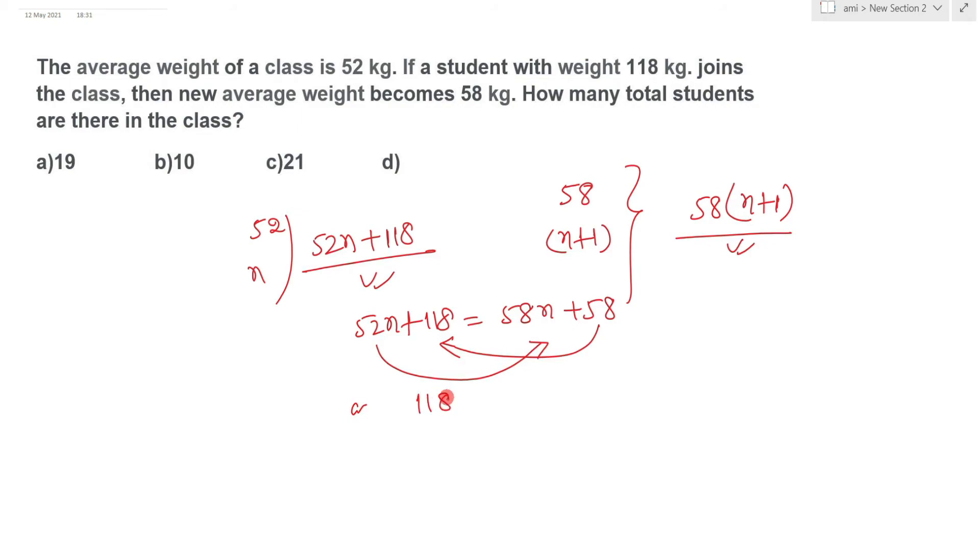Take 58 to the left side and 52 to the right side. Then 118 minus 58 equals 58n minus 52n, which is 6n. This value will be 60, so n equals 10.